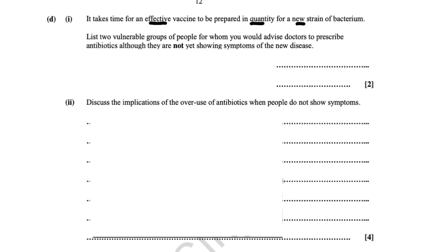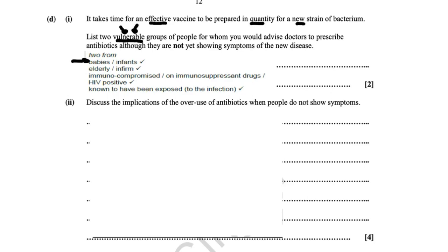It takes time to prepare an effective vaccine in quantity for a new strain of bacteria. Two vulnerable groups for whom doctors would prescribe antibiotics — though not yet showing symptoms — would be those with poor immune systems. Examples include babies or infants, the elderly, immunosuppressed individuals (such as transplant patients on immunosuppressive drugs), people who are HIV-positive with a reduced number of T helper cells, and people exposed to the infection who have not yet developed it.